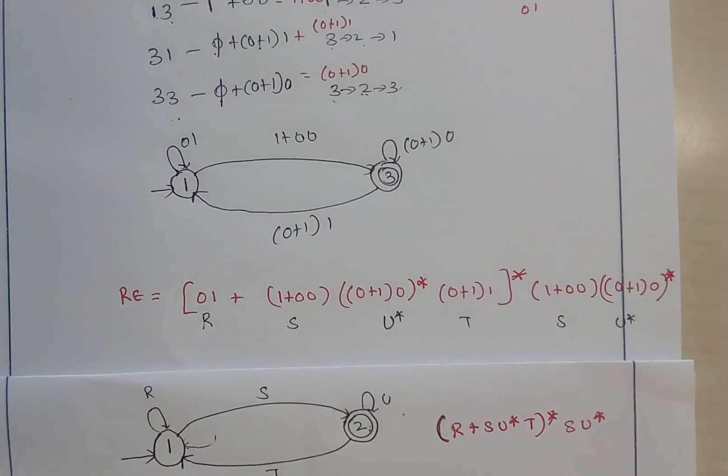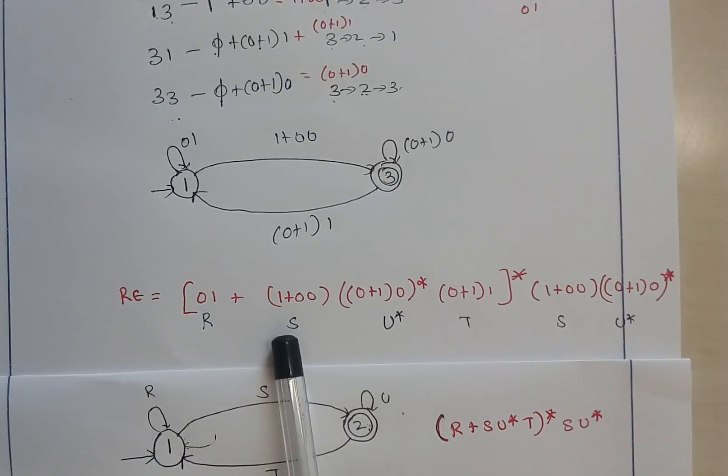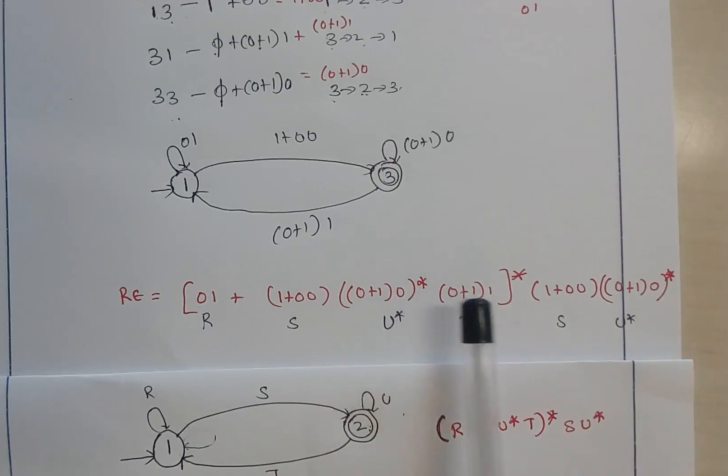So this is the final regular expression: r value was 0+1, plus s value was 1+00, and then u star, that is (0+1) concatenate with 0, the whole star, concatenate with t, that is (0+1)1 concatenate with 1.